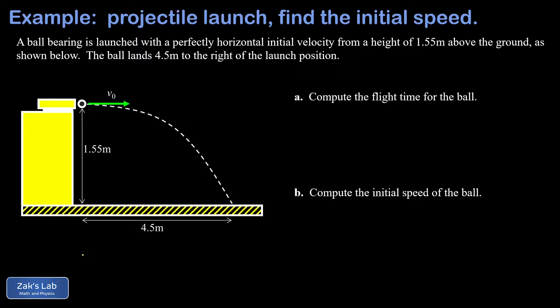In other words, the horizontal displacement for that ball bearing during the flight. In part A, we're going to get the flight time for the projectile. And then in part B, we're going to compute that initial launch speed for the ball.